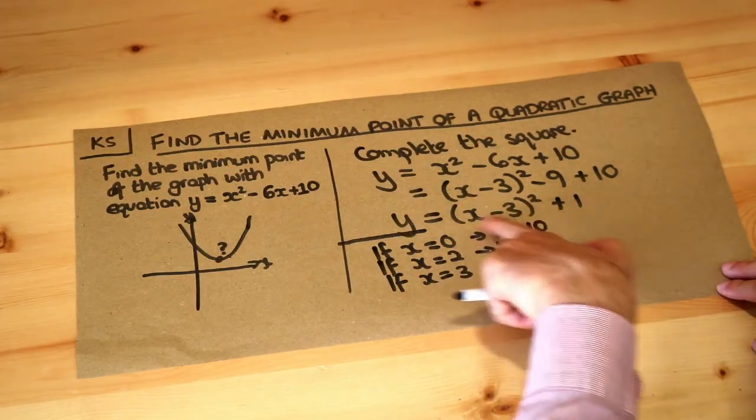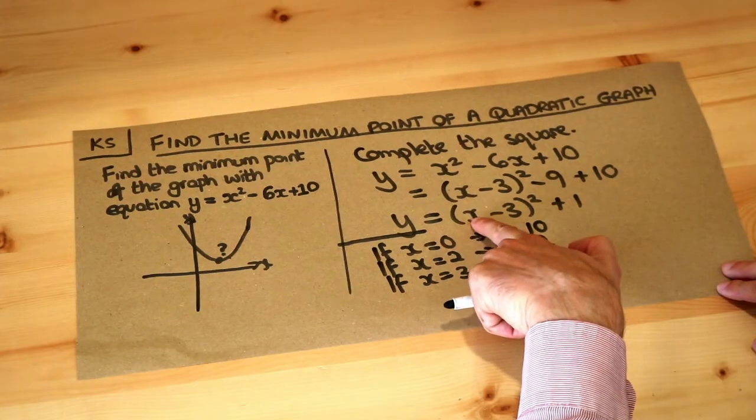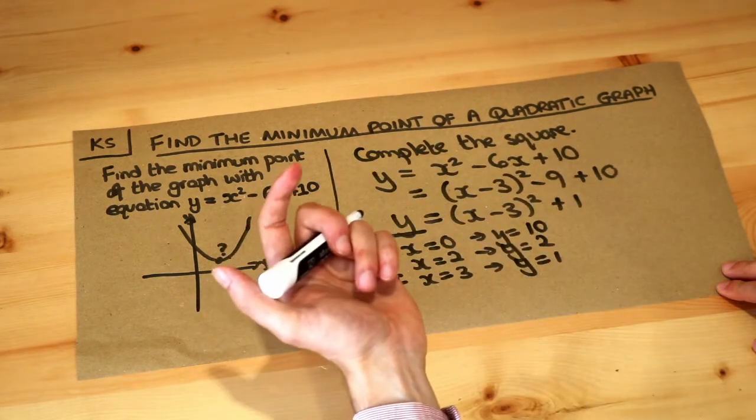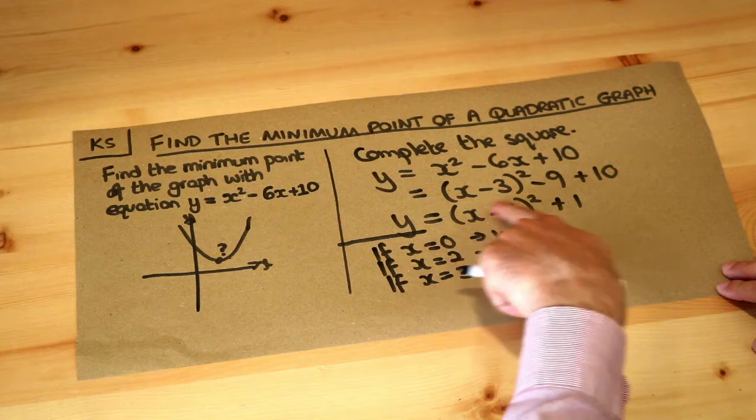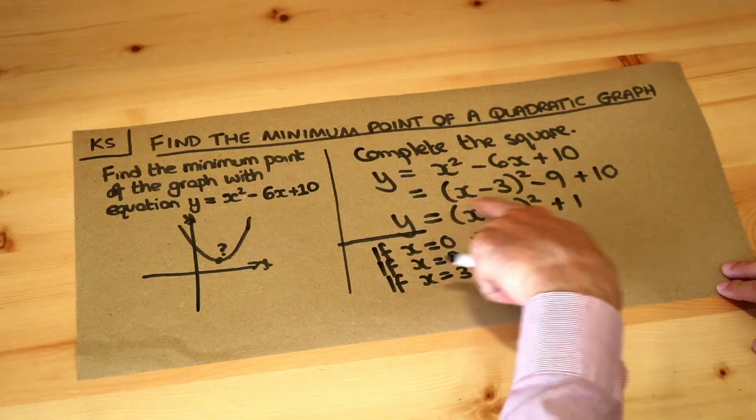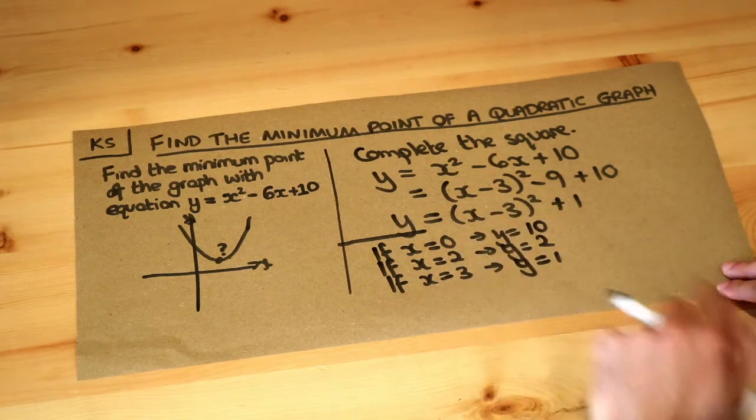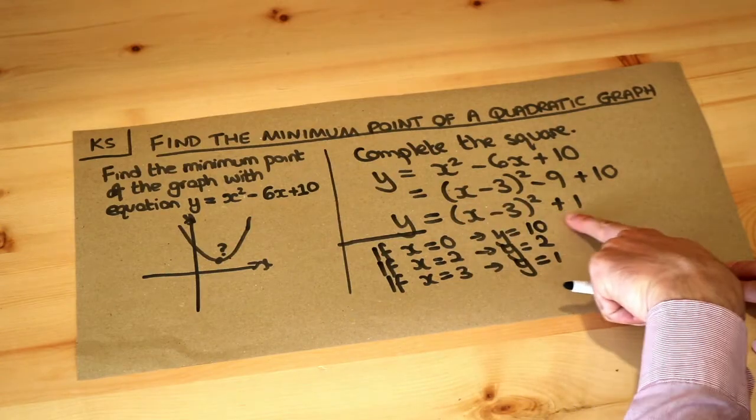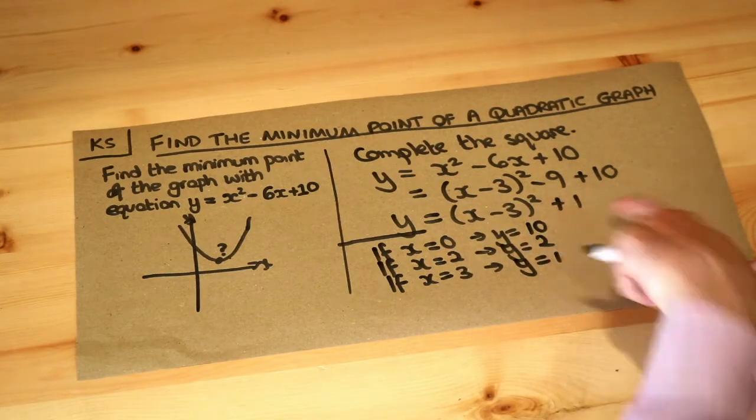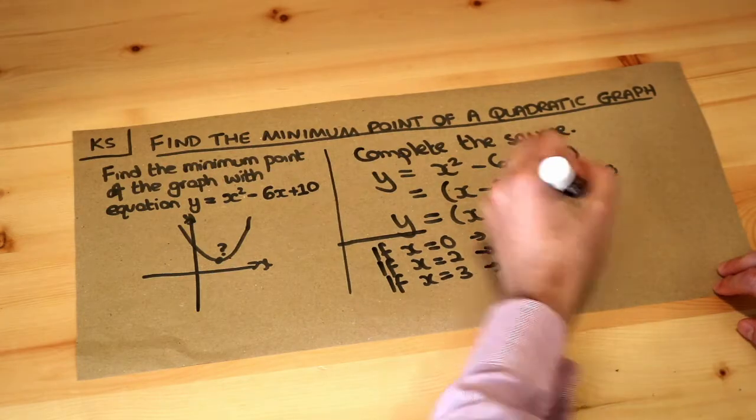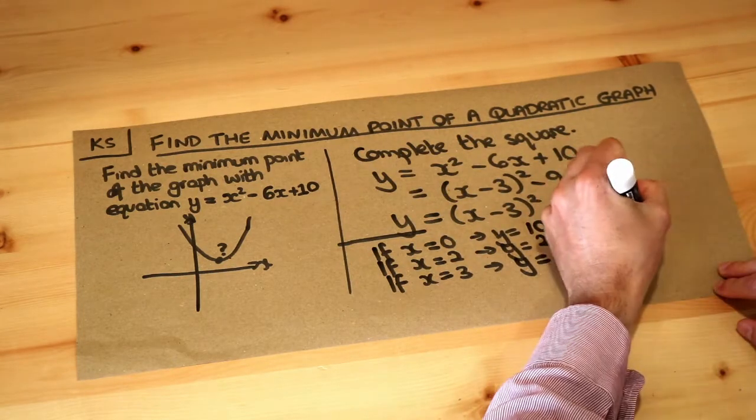And to make this thing 0, you make x 3, because then 3 minus 3 would be 0. So we choose the value of x which would make this squared thing 0, which in this case is 3. And then if you sub in 3, we end up with the y value being this number at the end, the plus 1. So the answer in this particular case is 3, 1.